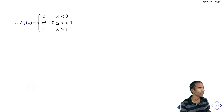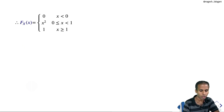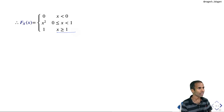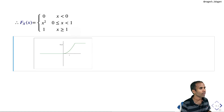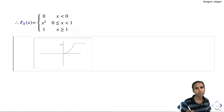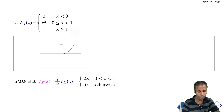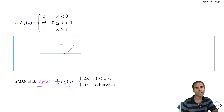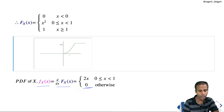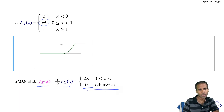This CDF is a continuous function, so we can obtain the PDF by differentiating. Outside [0, 1] the function is constant, so the derivative is 0. On (0, 1), the derivative of x² is 2x. Therefore, the PDF is: f(x) = 2x for 0 ≤ x < 1, and 0 otherwise.